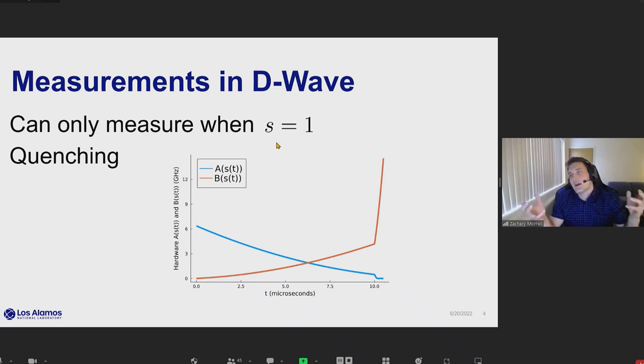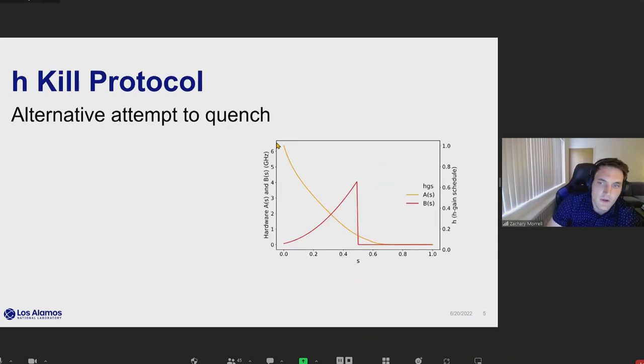you end up having such a large minimum gap that on the timescales that we considered with D-Wave, we were getting relatively difficult to differentiate results. So that led us to introduce a new annealing schedule, which we call the H-kill protocol.